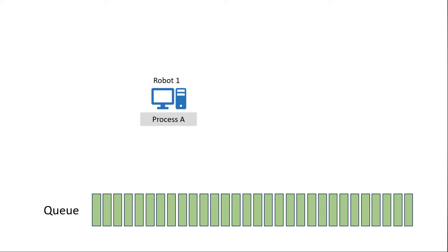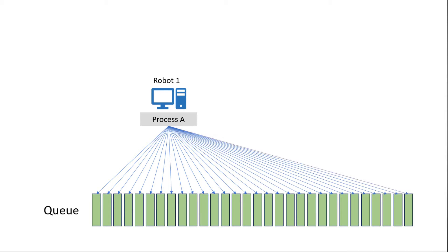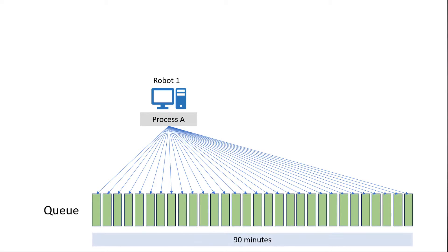So we have a robot and a single process A, and a queue with a number of queue items in it. Whenever we fire process A using a queue trigger, process A is going to execute a number of times and process each queue item in sequence until it's done. It takes a little bit of time because there's only one process, one machine, but a ton of queue items. Let's say this takes 90 minutes to process — that's a bit longer than what we want.